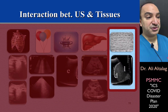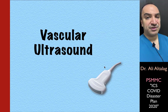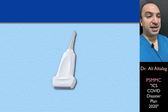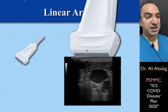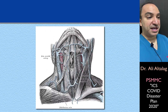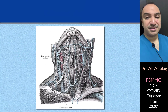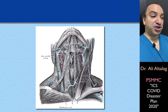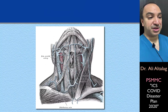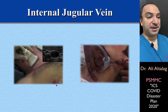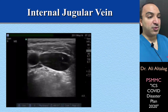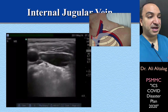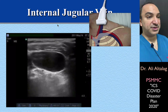Let's start with vascular ultrasonography. We use the linear array transducer for vascular imaging and procedures, and this is how the transducer relates to the image itself. When we want to cannulate one of the veins, we basically choose mainly the IJ or internal jugular vein on the right side most of the time. We can use either the transverse or longitudinal approach. This is how the IJ looks on the left side.